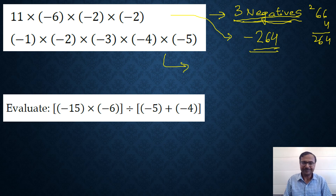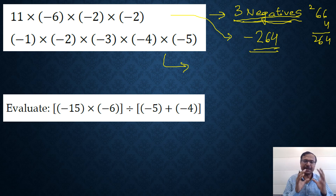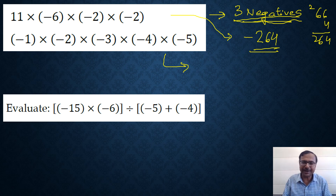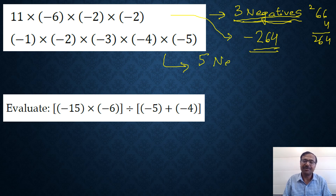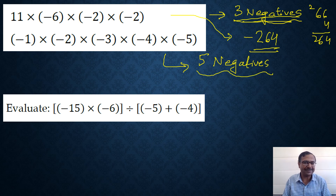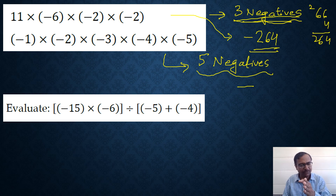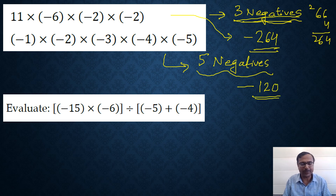For the second question, similar to the previous example: minus 1, minus 2, minus 3, minus 4, and minus 5 are multiplied. Count the negatives — all 5 are negative, and 5 is odd, so the answer is negative. Multiply the whole numbers: 1×2=2, 2×3=6, 6×4=24, 24×5=120. So the answer is minus 120.